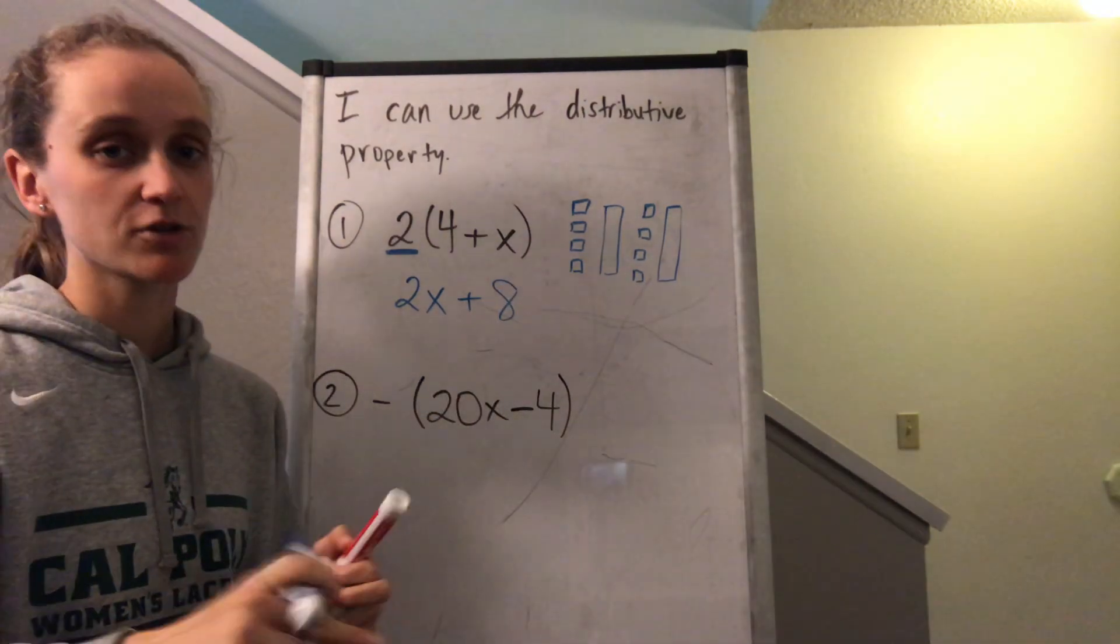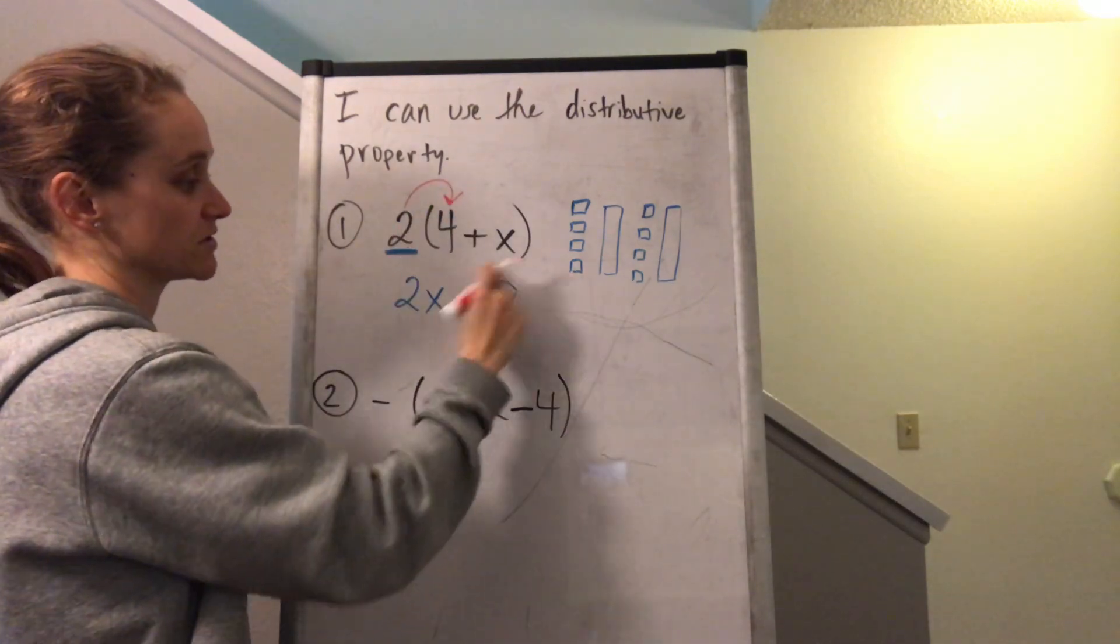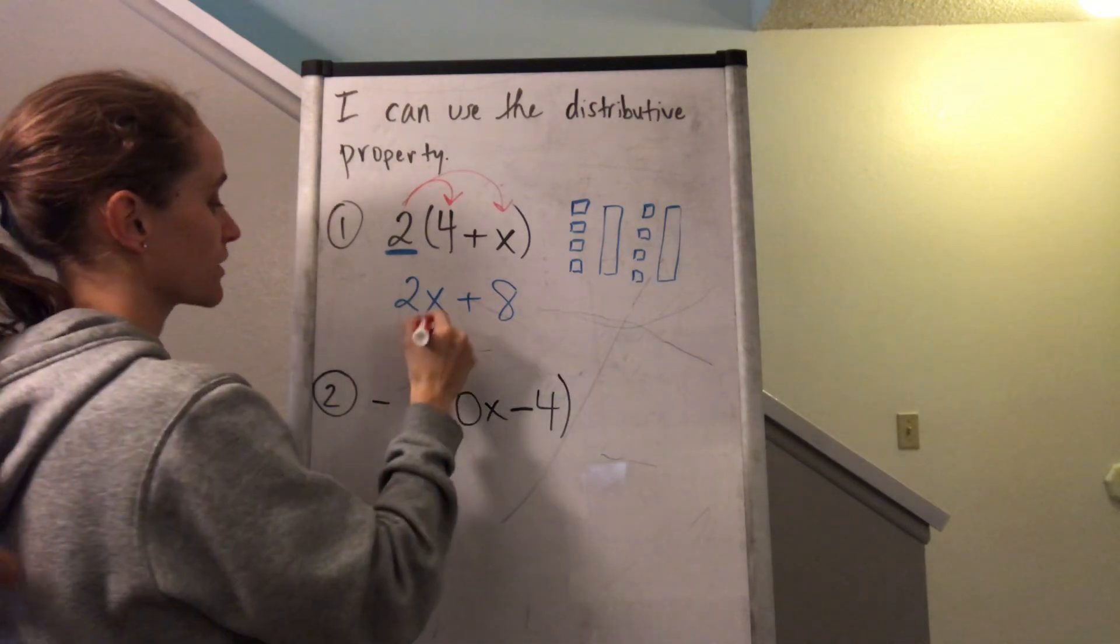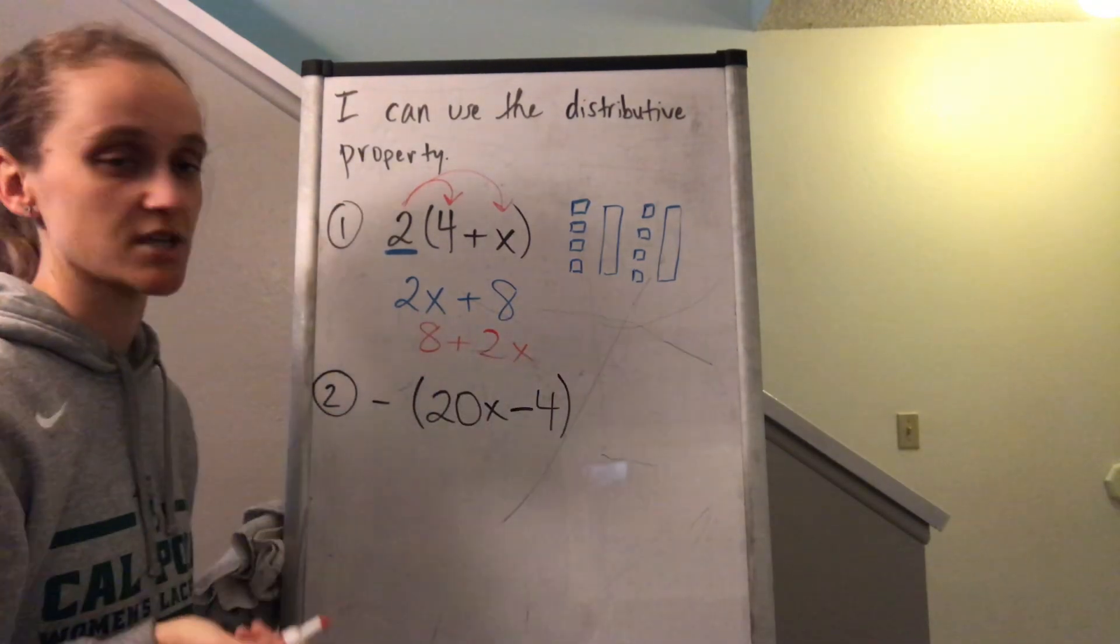And if I wanted to use a shortcut for distributive property, I would do two times four is eight, so that comes in here, and then two times X would be two X. It doesn't matter if you write it two X plus eight or eight plus two X, it's still the same thing.